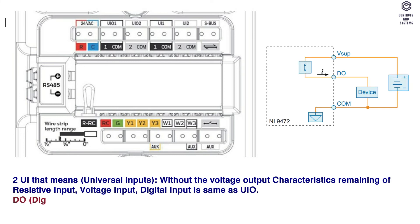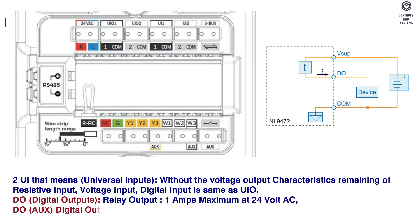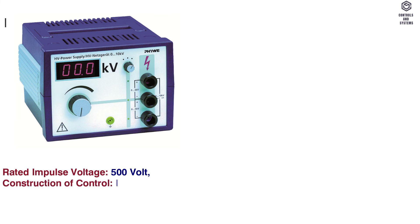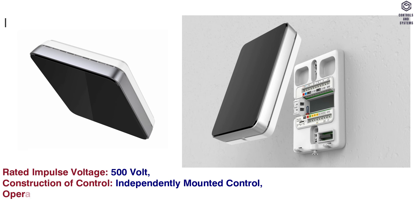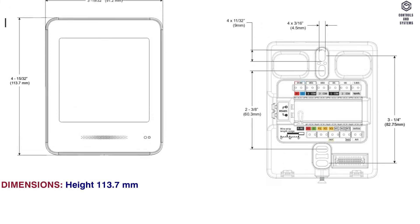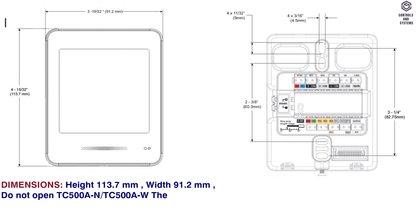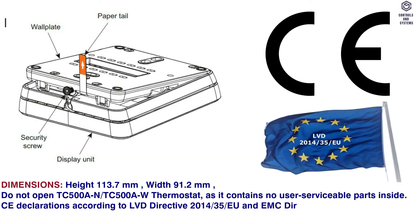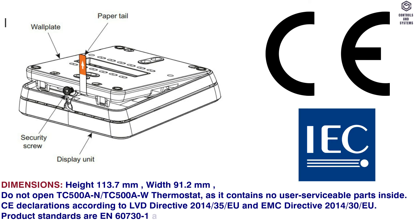Digital outputs (DO): relay output — 1 amp maximum at 24V AC. Digital outputs auxiliary (DO aux): relay dry contact — 1 amp maximum at 24V AC or DC. DO electrical characteristics: rated impulse voltage 500V, construction — independently mounted control, operation method — Type 1 action, pollution degree 2, purpose of control — operating control. Dimensions: height 113.7 mm, width 91.2 mm. Do not open the TC500AN or TC500AW thermostat as it contains no user-serviceable parts inside.